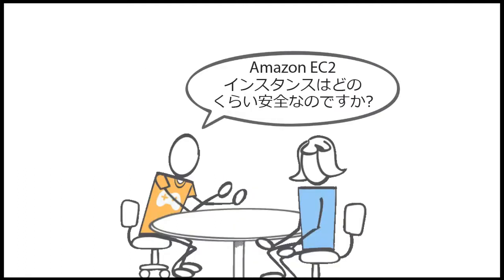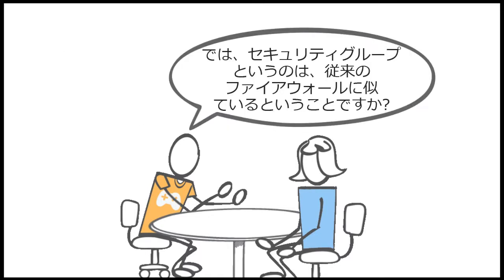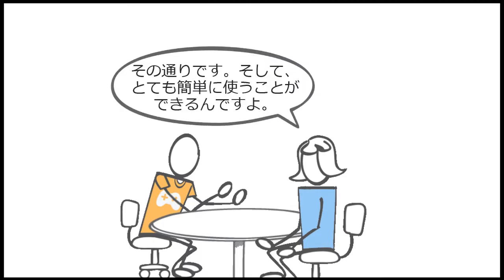How secure are my Amazon EC2 instances? There are settings that enable you to specify the protocols, ports, and source IP ranges that can reach your instances using security groups. So security groups are similar to traditional firewalls? Yes, and they are very simple to use.